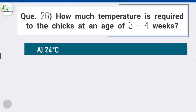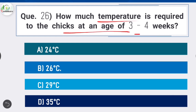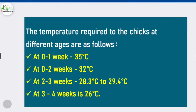Question 26: How much temperature is required for chicks at the age of three to four weeks? The temperature requirements for chicks at different stages are: 0 to 1 week — 35°C; 0 to 2 weeks — 32°C; 2 to 3 weeks — 28.3°C to 29.4°C; and 3 to 4 weeks — 26°C.